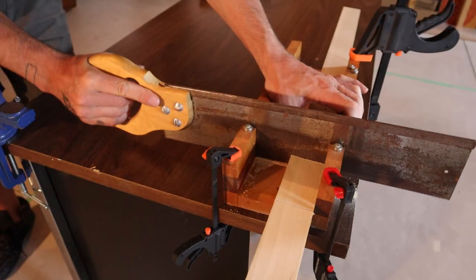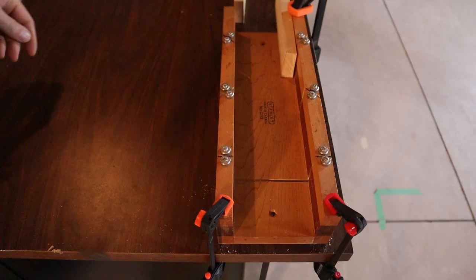As you get to the end of your cut, just make sure you flatten out your saw nice and flat with the bottom of the miter box so that you don't cut into the corners of it.